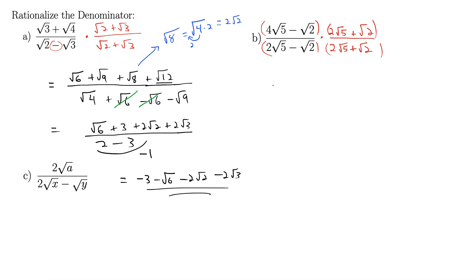Now we are going to do a bunch of foiling. On top here, we have 4 rad 5 times 2 rad 5. That's 8 rad 25. That's our first. Outside, 4 rad 5 times rad 2 is 4 rad 10. Inside, minus 2 rad 10. And last, minus rad 2 times rad 2 minus rad 4. All over, what happens down in the denominators here? 2 rad 5 times 2 rad 5, 4 rad 25. Outside, 2 rad 5 plus rad 2 plus 2 rad 10. Inside, minus rad 2 times 2 rad 5 minus 2 rad 10. And finally, minus rad 2 times rad 2, rad 4.